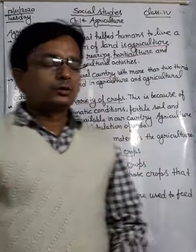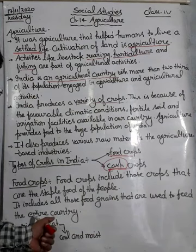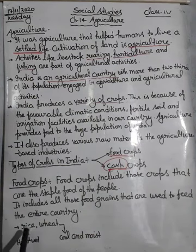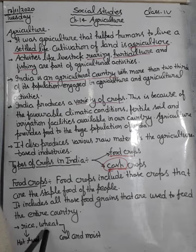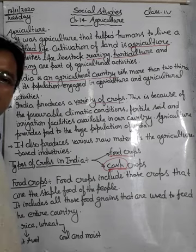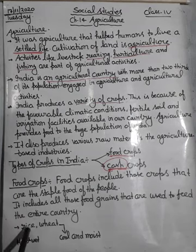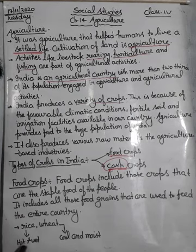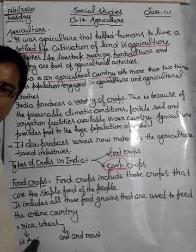The main food crops are rice and wheat. Both need different climatic conditions. For rice, a hot and wet climate is required.